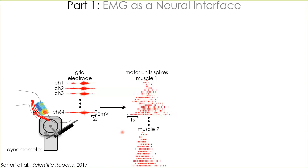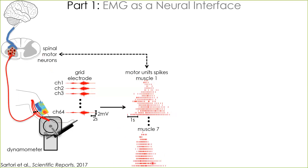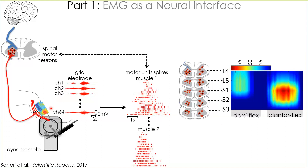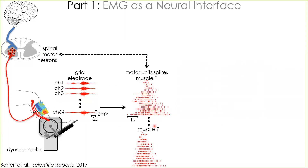Doing this for all muscles spanning the ankle, you can extract spike trains for populations of hundreds of alpha motor neurons and really open a window into spinal mechanisms. If you combine this information with anatomical properties of the spine, you can map individual alpha motor neuron spike trains into lumbar and sacral segmental levels, visualizing how different spine segments engage in the control of the ankle joint. In the second part of the webinar, I will show how to link these discrete spike trains with OpenSim models to connect what happens at the spinal cord with resulting function at the musculoskeletal level.